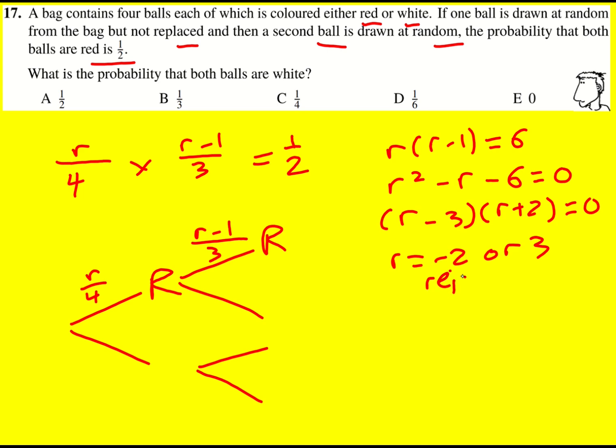Reject the negative because remember it's got to be a positive number of balls. There's three red balls and what that means is there's one white ball. And although there's a quarter chance of picking it on the first go, there's then none left on the second go. We can't actually pick two white balls so the answer is going to be zero.